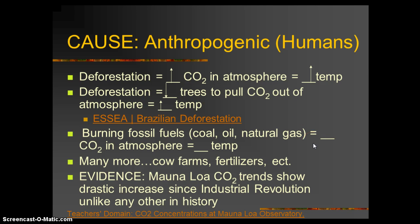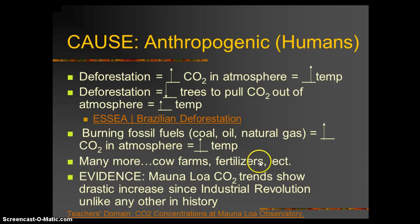Burning fossil fuels increases CO2 in the atmosphere, and with an increase in a greenhouse gas, it's going to increase the temperature. We also do other things — we like our beef, so we have cow farms. Cows excrete methane, which is a very potent greenhouse gas. We also use fertilizers that release another greenhouse gas. So there are other things humans do that produce greenhouse gases.